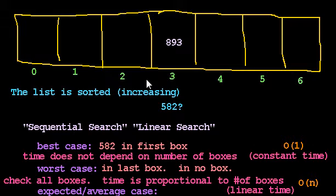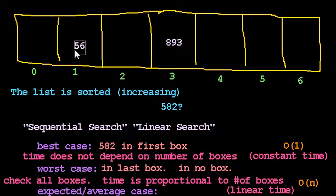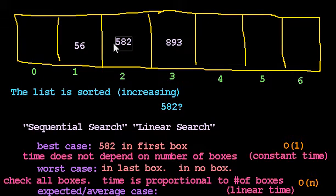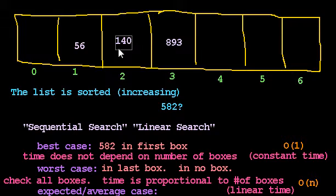So we'll look again. The obvious box to look in next is the one in the middle of the remaining boxes — so we'll look in box 1. Suppose we open box 1 and it has 56. That tells us if 582 is there, it must be in box 2. We'll look in box 2, and if the answer is 582 we'll throw a big party; if the answer is 140, we'll go home and cry. Either way, we'll know right away — and we only had to look at three boxes, never opening box 0, 4, 5, or 6.